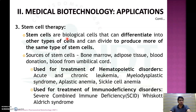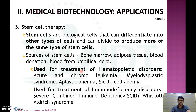The third application in medical biotechnology is stem cell therapy. Stem cells are biological cells that can differentiate into other types of cells and can divide to produce more of the same type. They can be differentiated into liver cells, heart cells, muscle cells, and other organs. Successful stem cell therapy can treat conditions like hematopoietic disorders such as acute and chronic leukemia, myelodysplastic syndrome, sickle cell anemia, and immunodeficiency disorders like severe combined immunodeficiency.